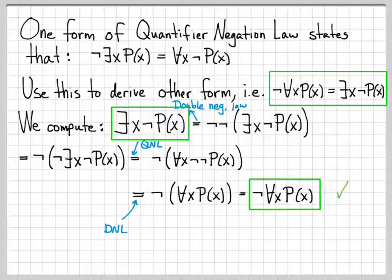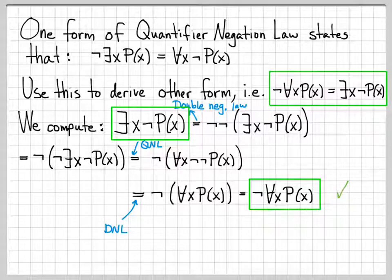This is actually an example of what we call a direct proof. We start with a quantity, we use manipulations to get it into another form that we're trying to establish. So really what we've done here is a direct proof, and we'll learn more about direct proofs later on in the class. For now, we've used a direct proof to establish the other form of the quantifier negation law, assuming that the first form is true.